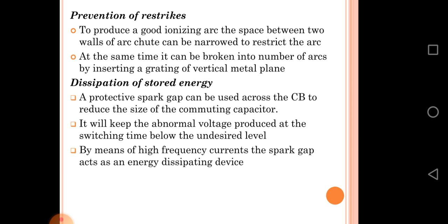Dissipation of stored energy: a protective spark gap can be used across the circuit breaker to reduce the size of the commutating capacitor. It will keep the abnormal voltage produced at switching time below the undesired level by means of high frequency currents. The spark gap acts as an energy dissipating device.